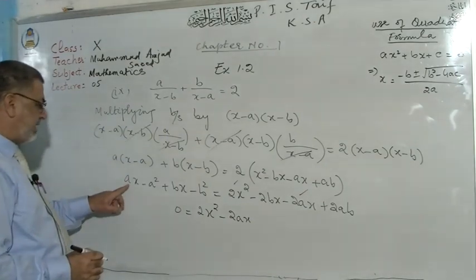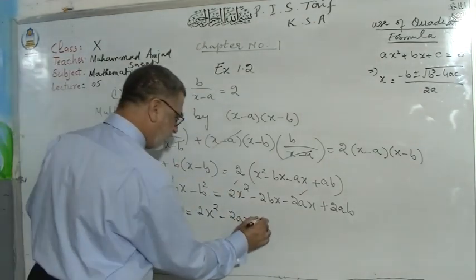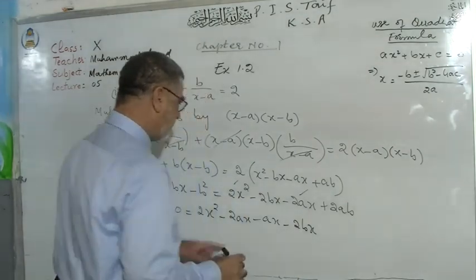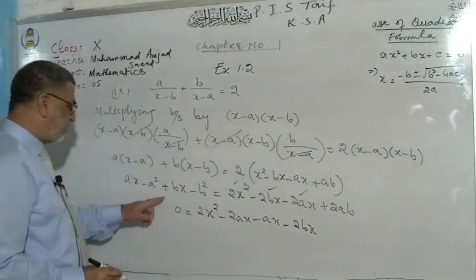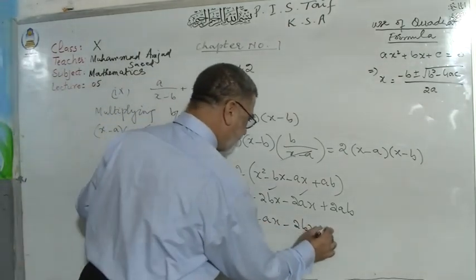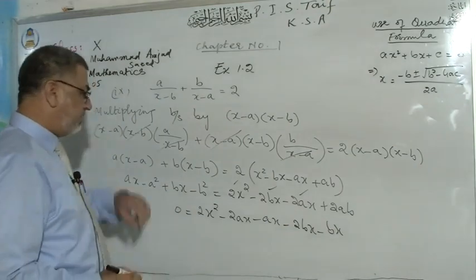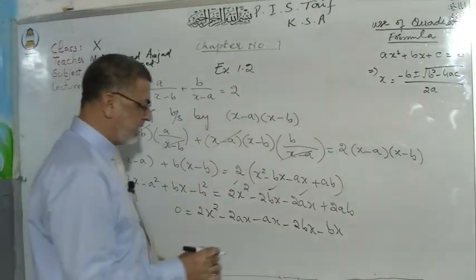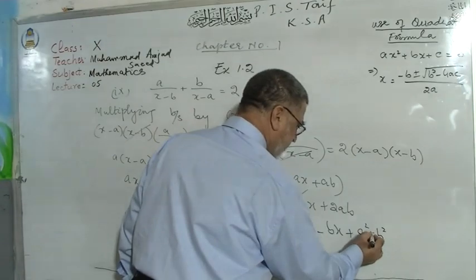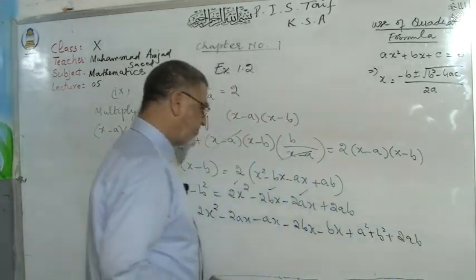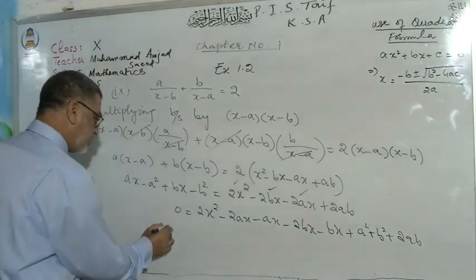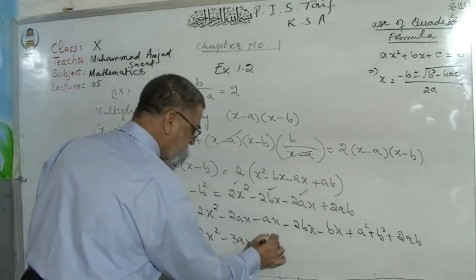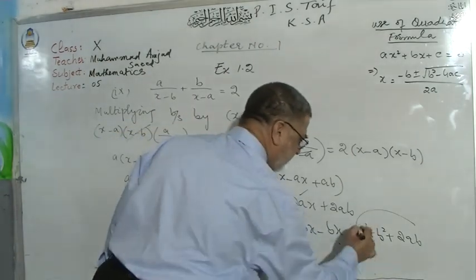After that we have minus a² and minus b², shifted to the right-hand side giving plus a² + b² + 2ab. This is plus 2ab. So 0 = 2x² − 3ax − 3bx + a² + b² + 2ab. Note that a² + b² + 2ab is actually a complete square: (a+b)².